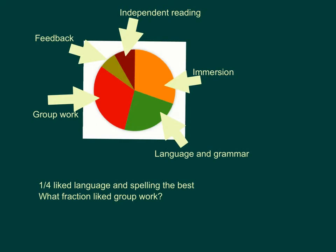Now in this case it doesn't actually matter about the quarter that was mentioned. What I want to look at is my immersion and my group work. Both of these look similar. Now if I visualise what happens when I move my immersion over to my group work, I can see that they are roughly about a third each. And if I were to add my independent reading and my feedback to my language, spelling and grammar, I would probably get a similar sized portion. This means that my group work is roughly about one third.